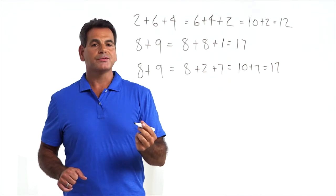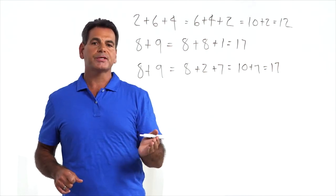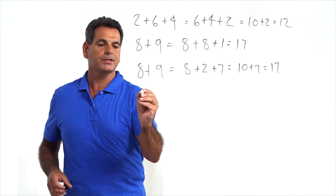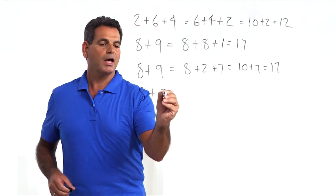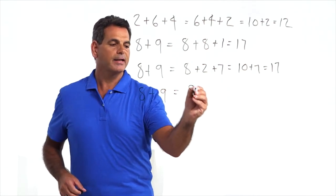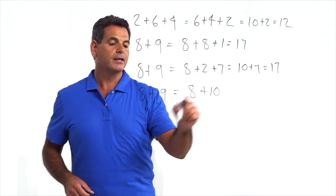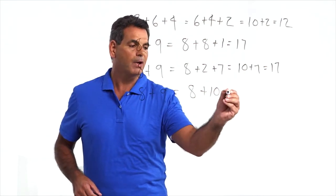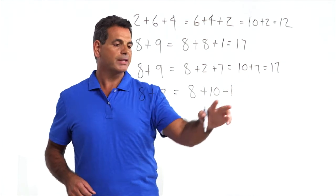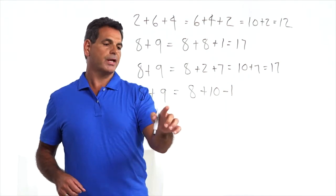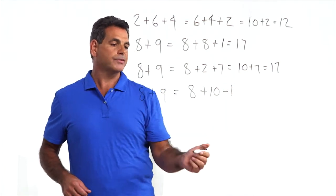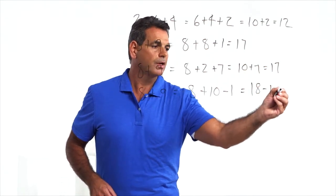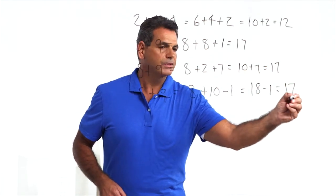How about adding tens? Students have learned how to add their tens, so this strategy is really easy for them. Eight plus nine equals eight plus ten, but we only want to add nine, so it's ten minus one. Notice that ten minus one is equivalent to nine, so we're adding the same thing. This becomes eighteen minus one equals seventeen.